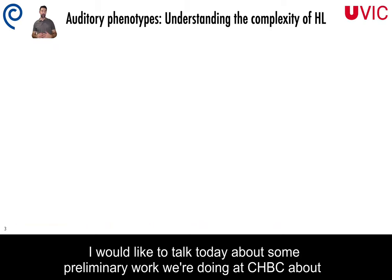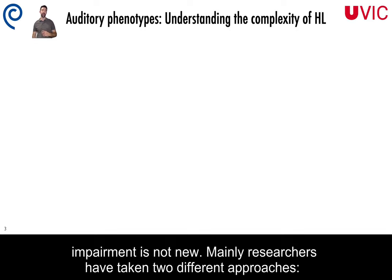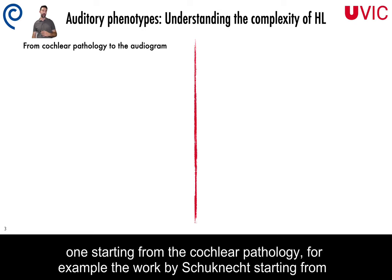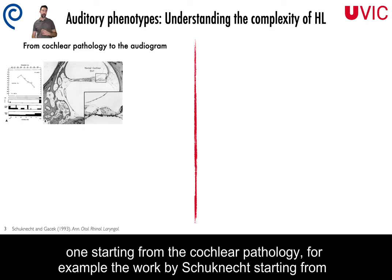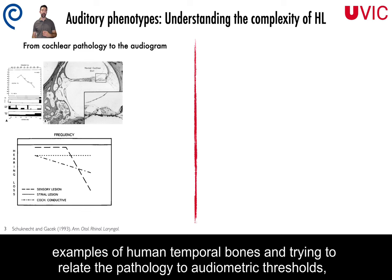I would like to talk today about some preliminary work we are doing at CHPC about auditory phenotypes. This idea of trying to understand the complexity of hearing impairment is not new, and mainly researchers have taken two different approaches. One, starting from the cochlear pathology — for example, work from Schuknecht, starting from examples of human temporal bones and trying to relate the pathology to audiometric thresholds.